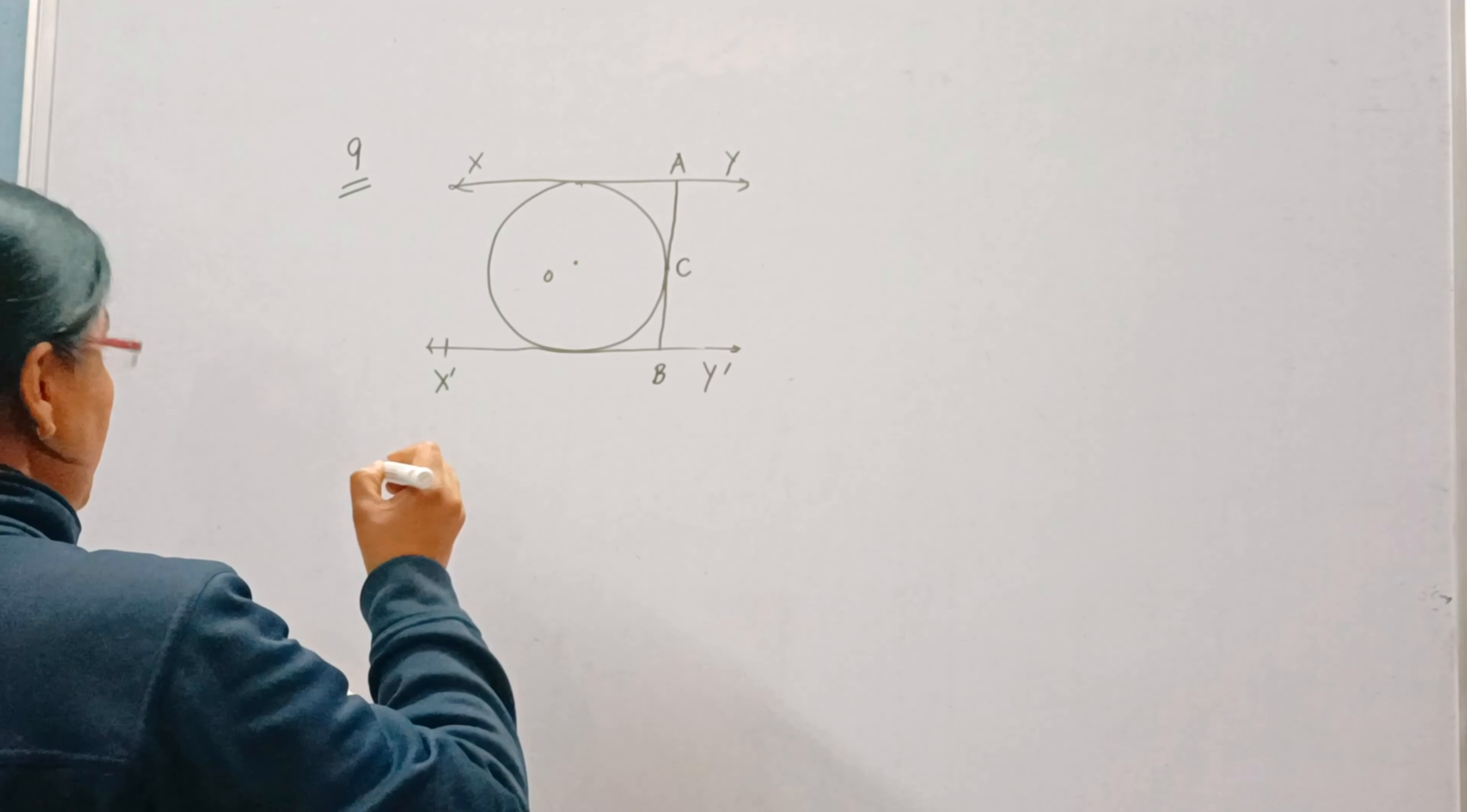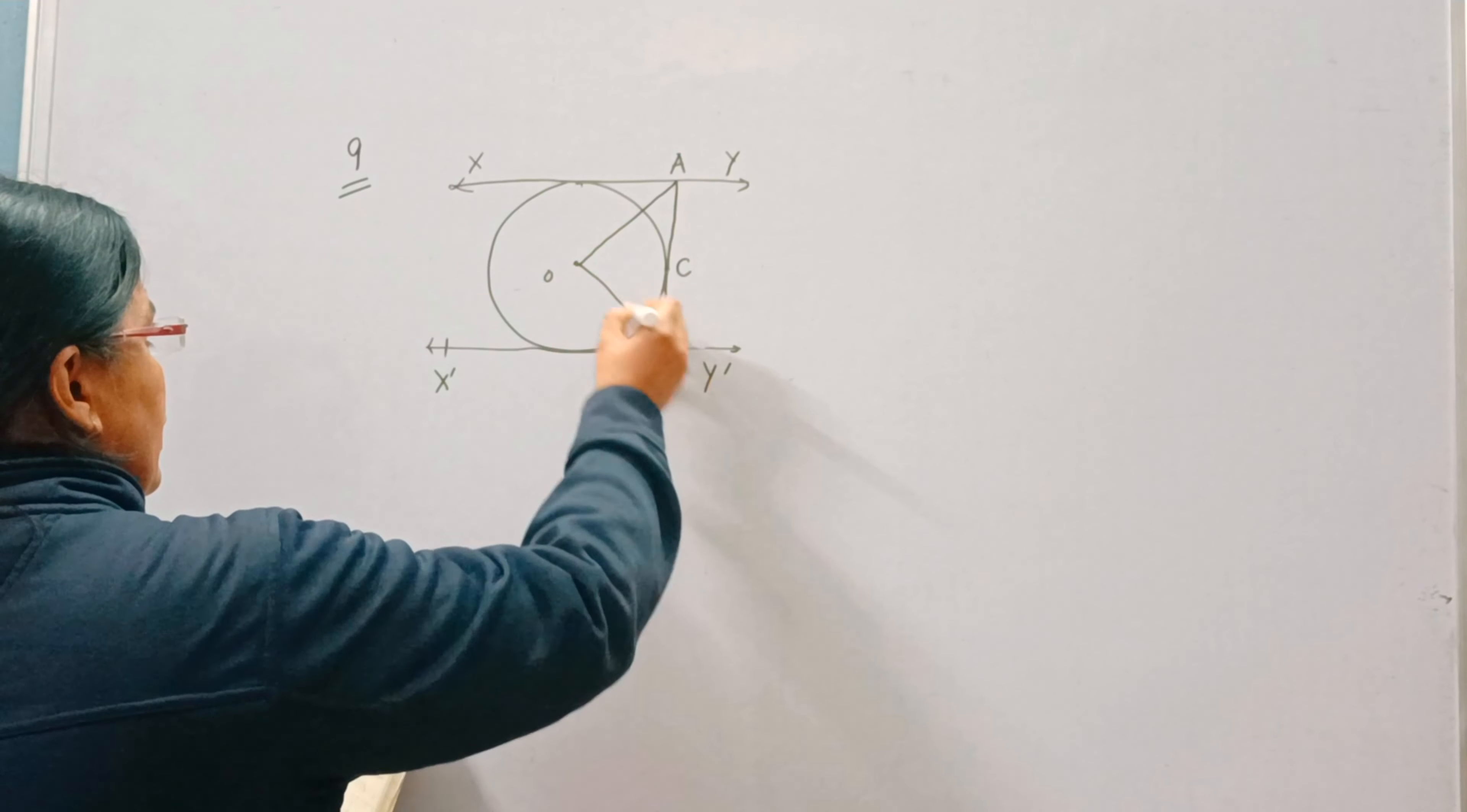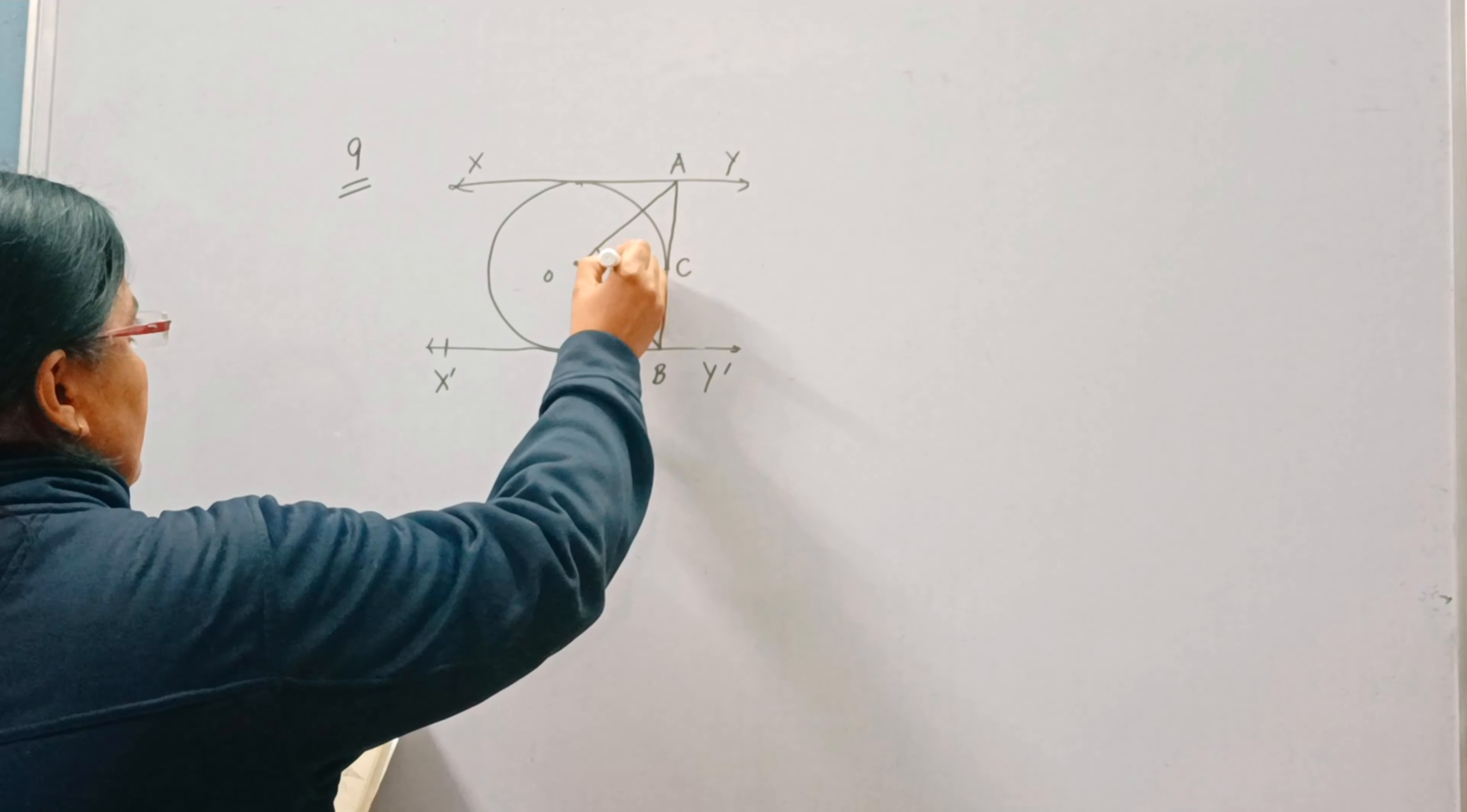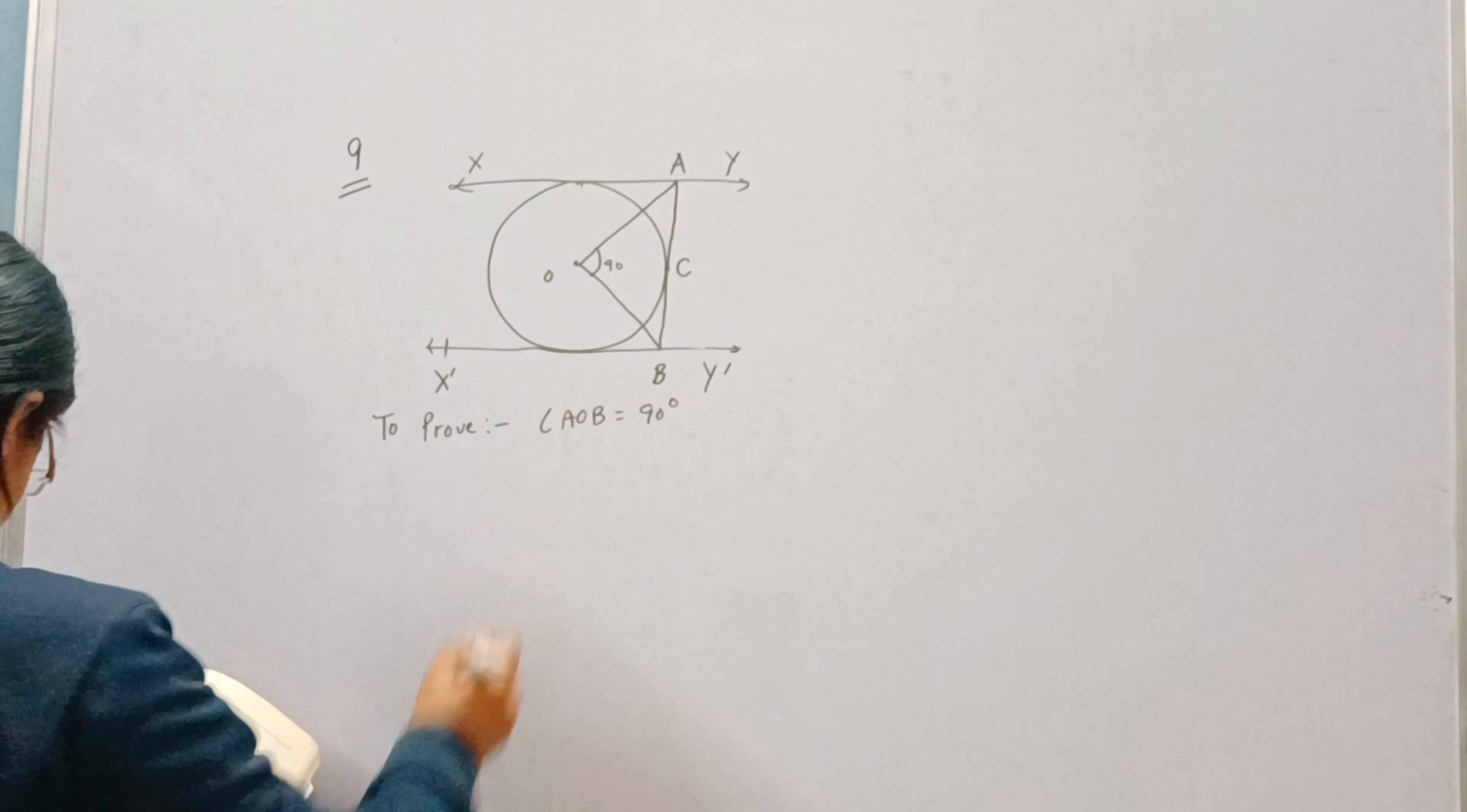Now you need to prove angle aob is 90 degree, this angle. So to prove angle aob is equal to 90 degree.